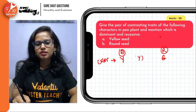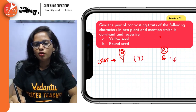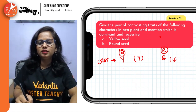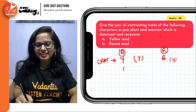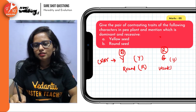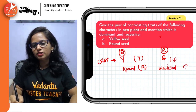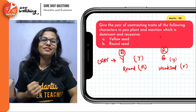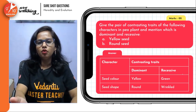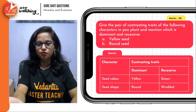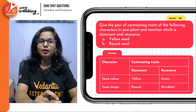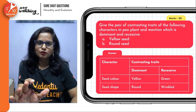Now for seed shape: round is again dominant. We will write capital R, and wrinkled is the recessive one, represented by small r. You need to be thorough with all seven contrasting characters — there should be absolutely no confusion. This is the summarized way of presenting your answer in your examination, which calls for proper paper presentation that will give you some bonus marks.